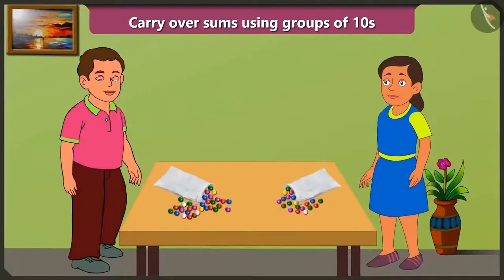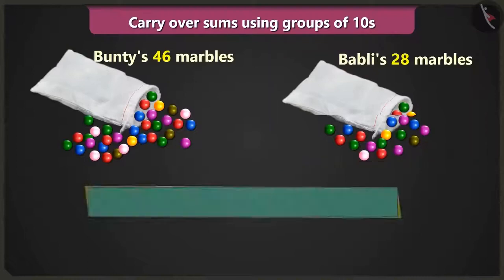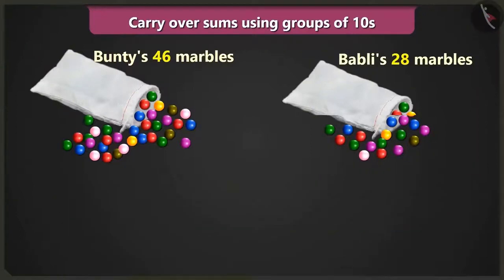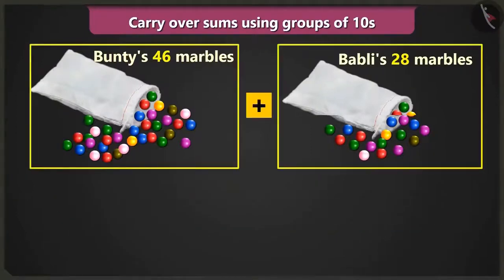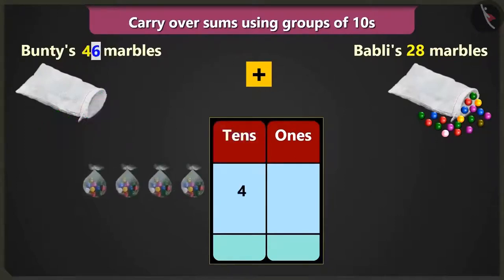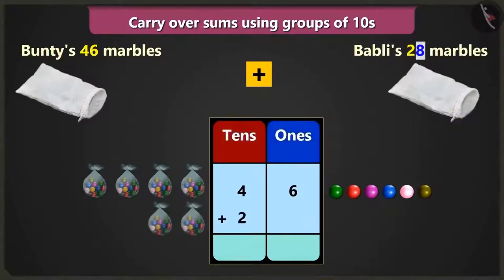Now after winning more marbles, I have a total of forty-six marbles and I have twenty-eight marbles. So how many marbles do we have together right now? Come on, let us add forty-six and twenty-eight. I have four tens and six ones — forty-six marbles — so we will write four in the box of tens and six in the box of ones. And I have two tens and eight ones, so we will write two in the box of tens and eight in the box of ones.